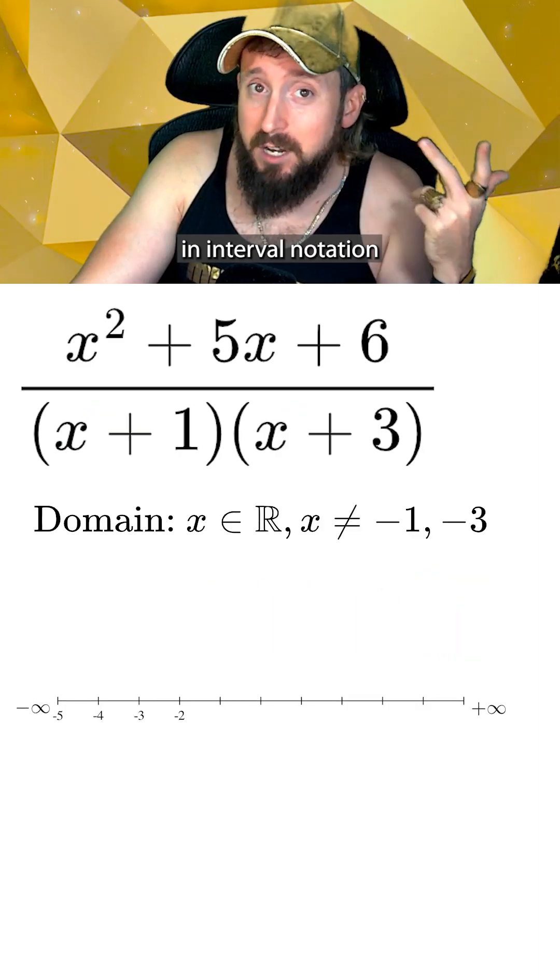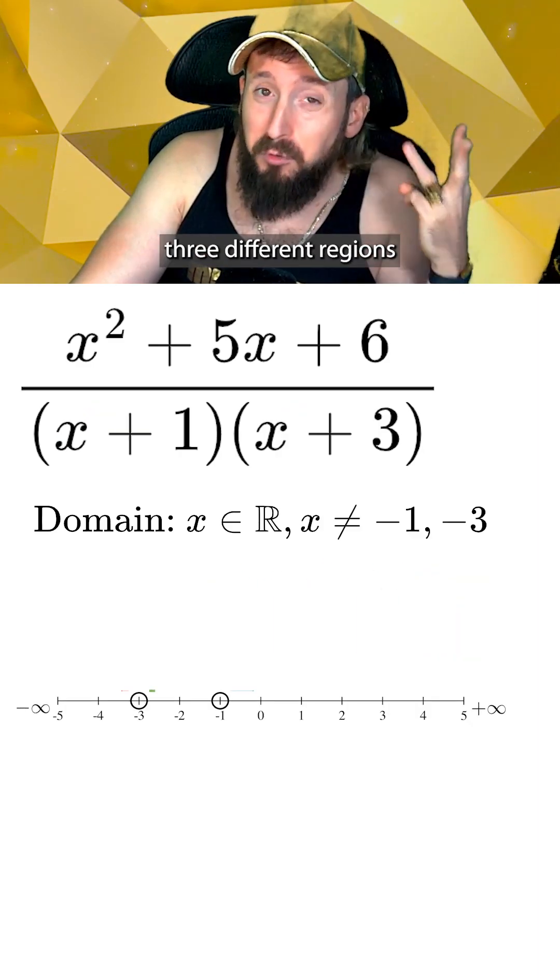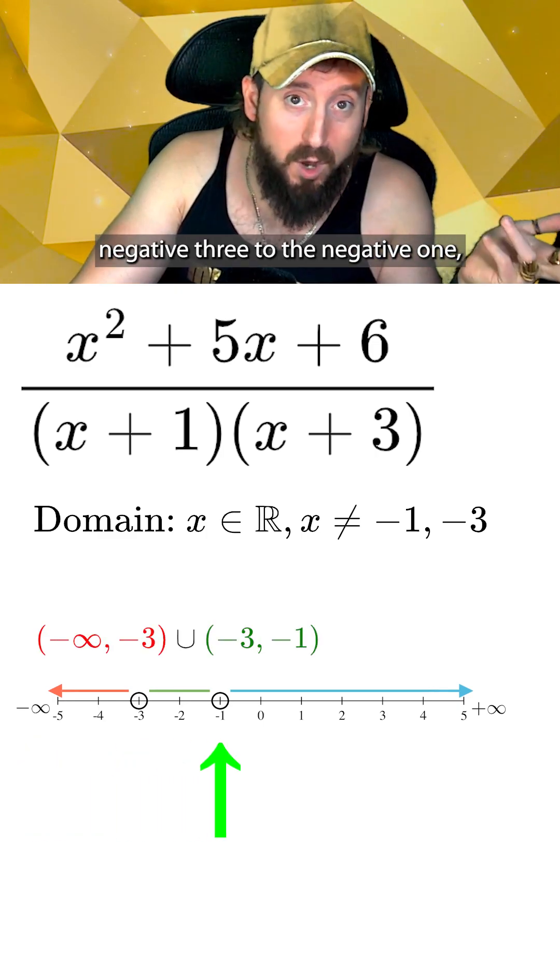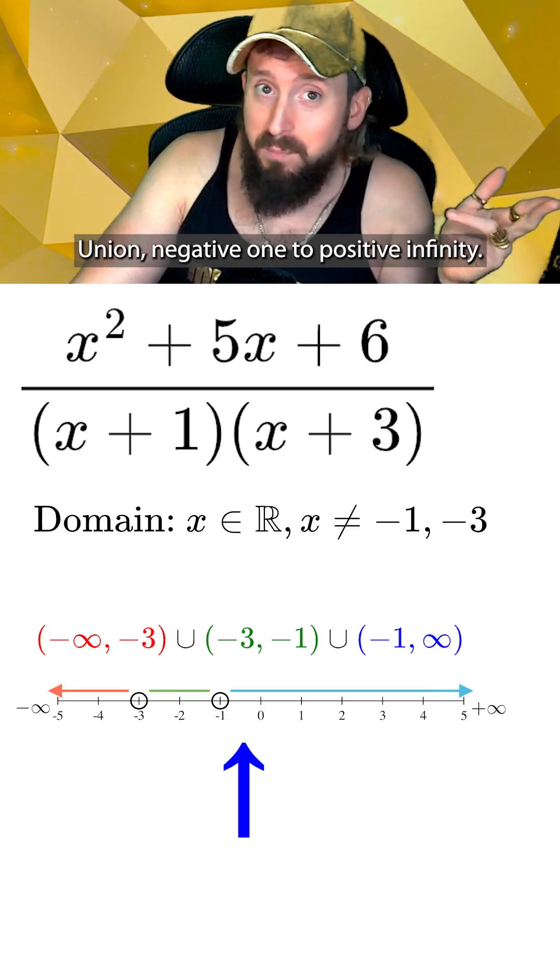If we were to write this out in interval notation, we would now have to connect three different regions: negative infinity to negative 3, union negative 3 to negative 1, union negative 1 to positive infinity.